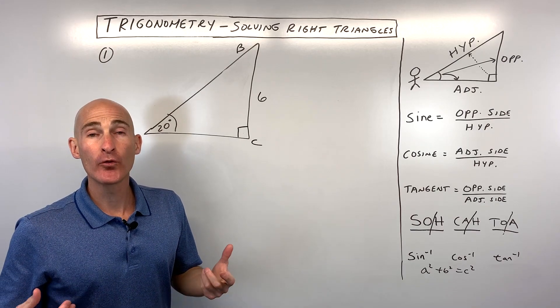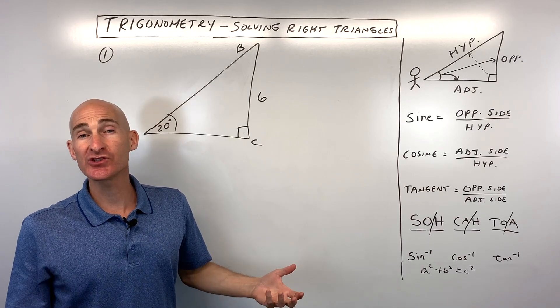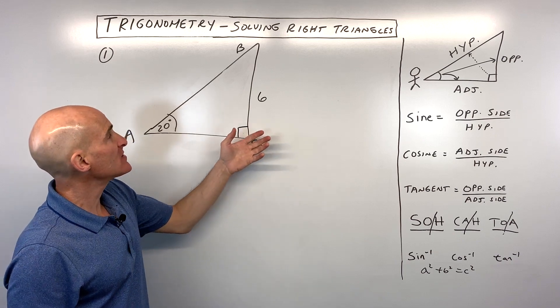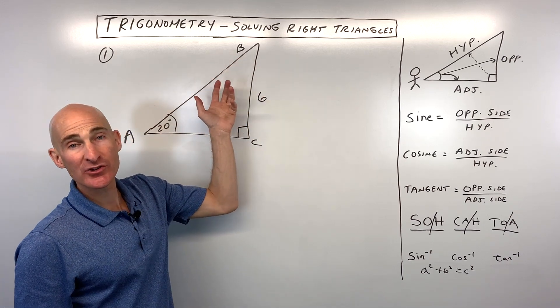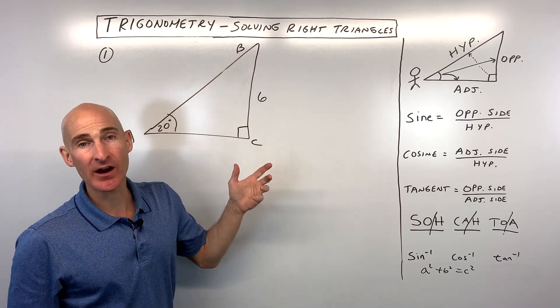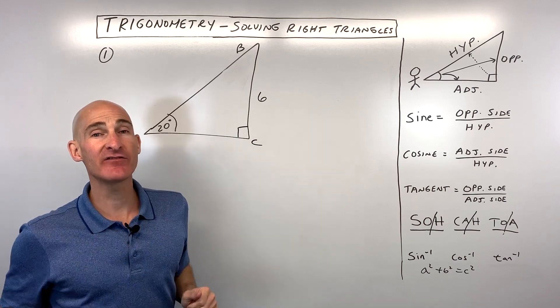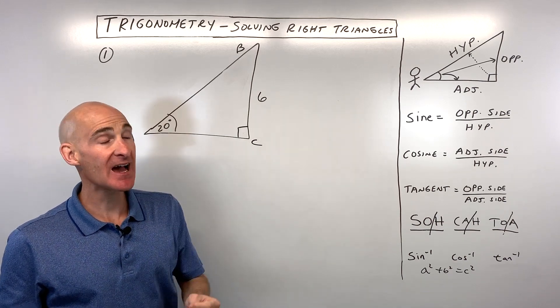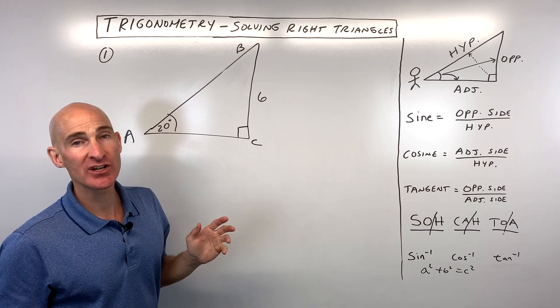In this lesson you're going to learn how to solve right triangles. So what does that mean to solve a right triangle? Well, it means that you want to find out what all the angle measures are and what all the side lengths are. So there's actually six pieces of information - the three angles and the three sides - but we're only given limited amounts of information here.